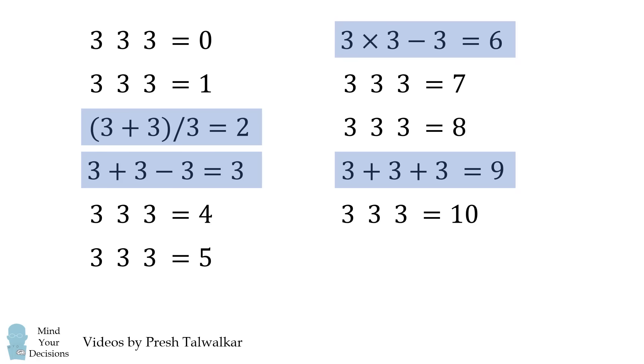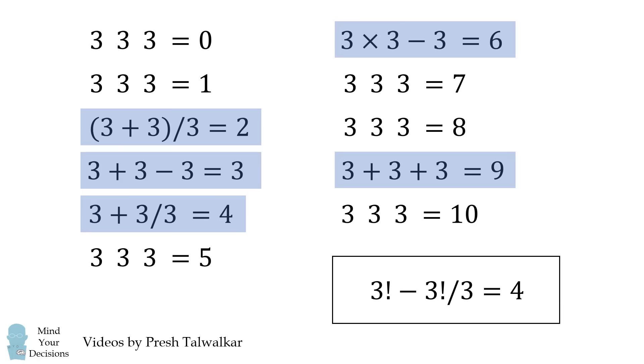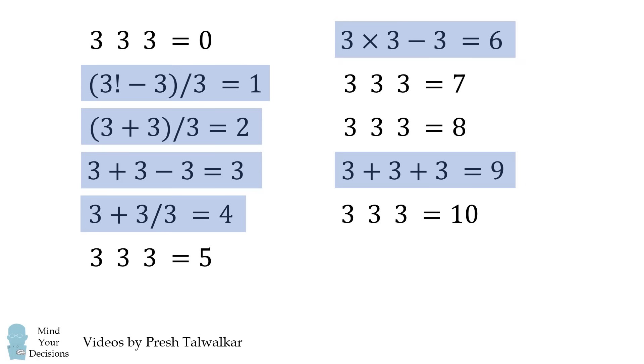Continuing on, we can get 4 by 3 plus 3 over 3. We could also do 3 factorial minus 3 factorial over 3. To get to 1, one way we could do this is 3 factorial minus 3, and then we divide that by 3. We could also do 3 to the power of 3 minus 3. Or we could do the square root of 3 times the square root of 3, and then we divide that by 3. That also gets to 1.